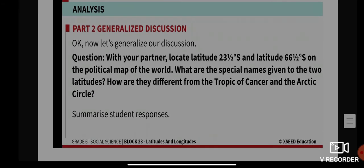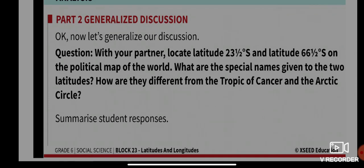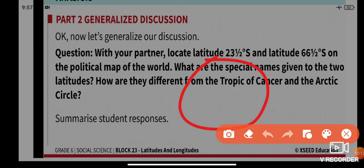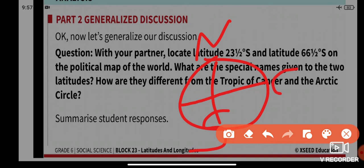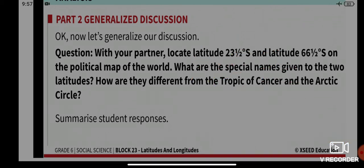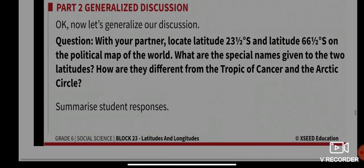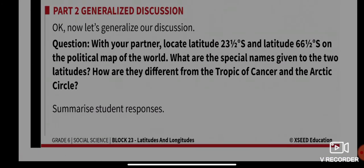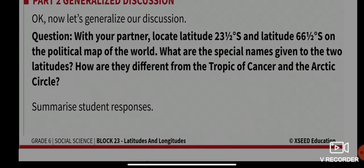Now, please locate latitude 23.5 degrees south and latitude 66.5 degrees south on the political map of the world. Remember: north refers to the upper part, south to the lower part. The middle line is the equator; above the equator is the Tropic of Cancer, below the equator is the Tropic of Capricorn, the upper circle is the Arctic Circle, and the lower one is the Antarctic Circle. What are the special names given to these two latitudes and how are they different from the Tropic of Cancer and the Arctic Circle?